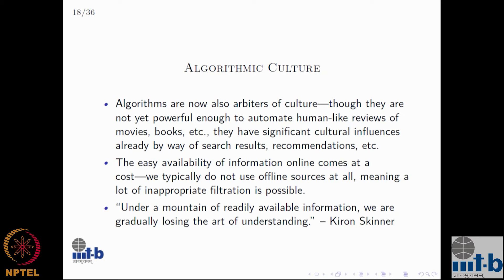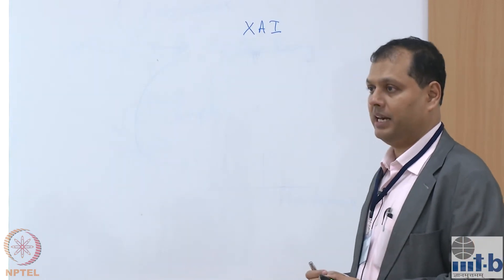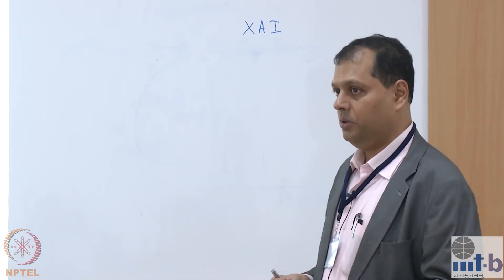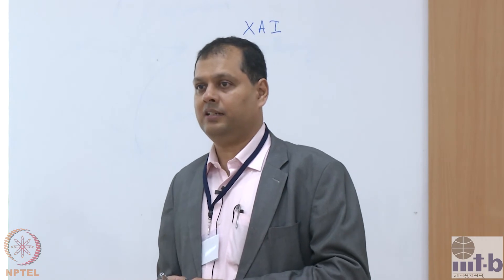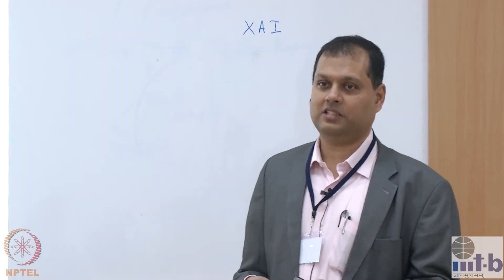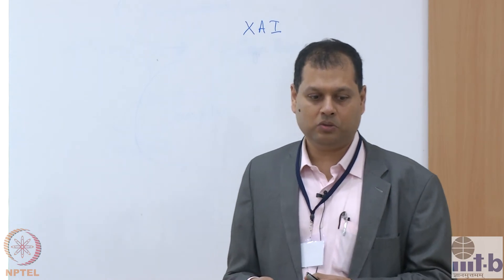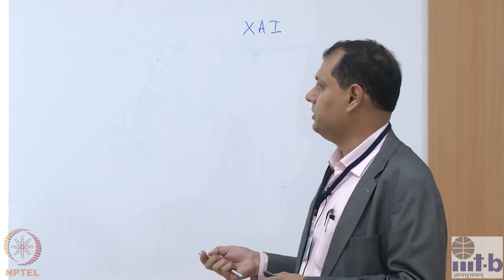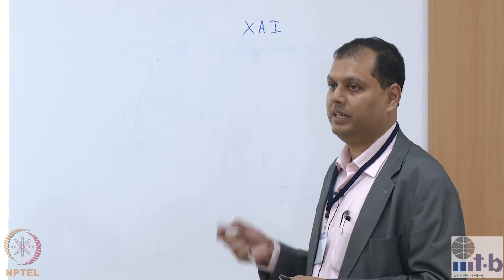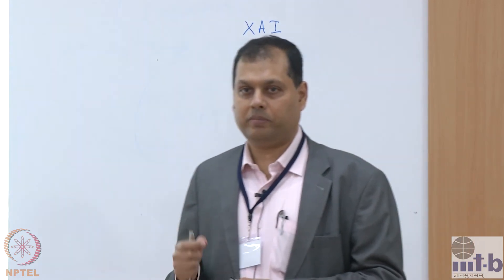Algorithmic culture is a different issue, where algorithms are also arbiters of culture in some senses. They're not cultural in the way human beings are — we have not yet reached the point where an algorithm can read a book and write a review, or watch a movie and give it a rave review. Only human beings can do that. But because you have search results and recommendations, they do have significant cultural impact.